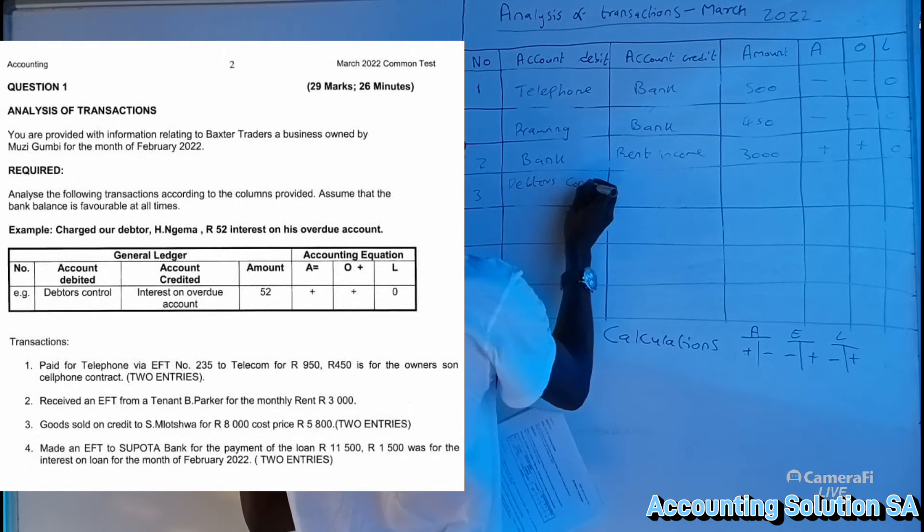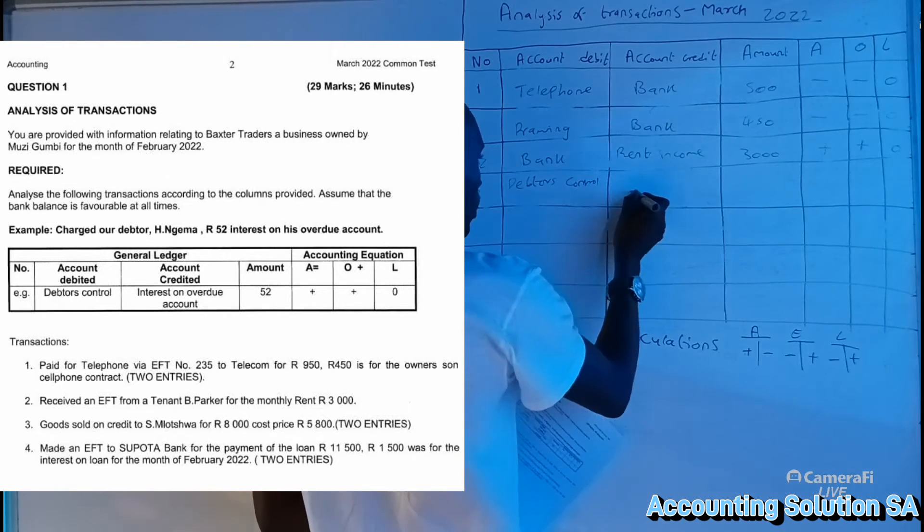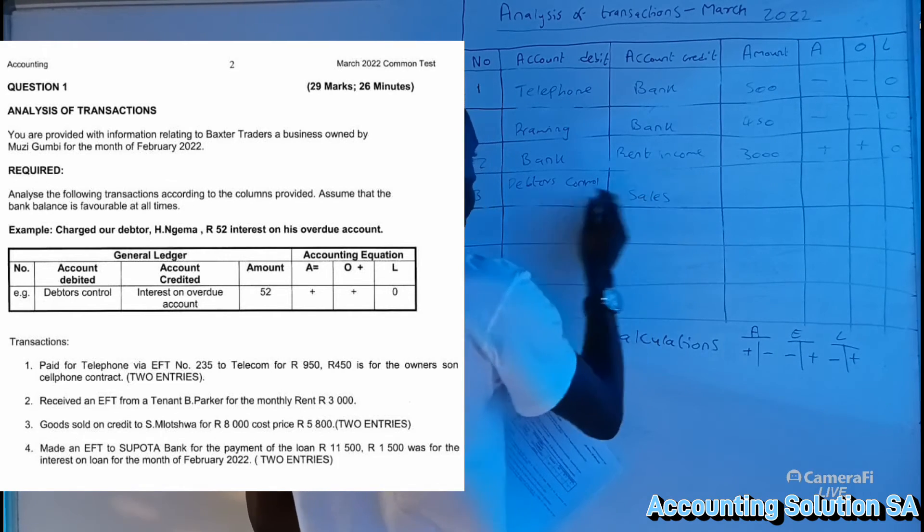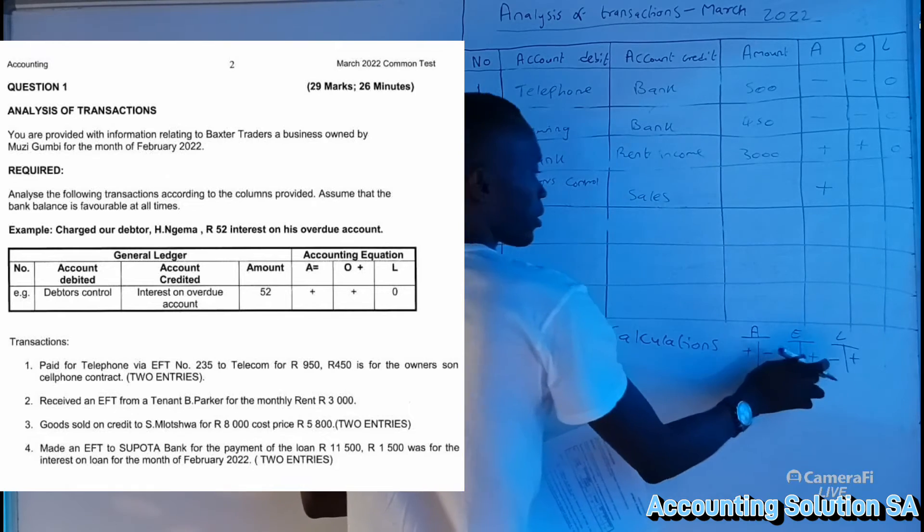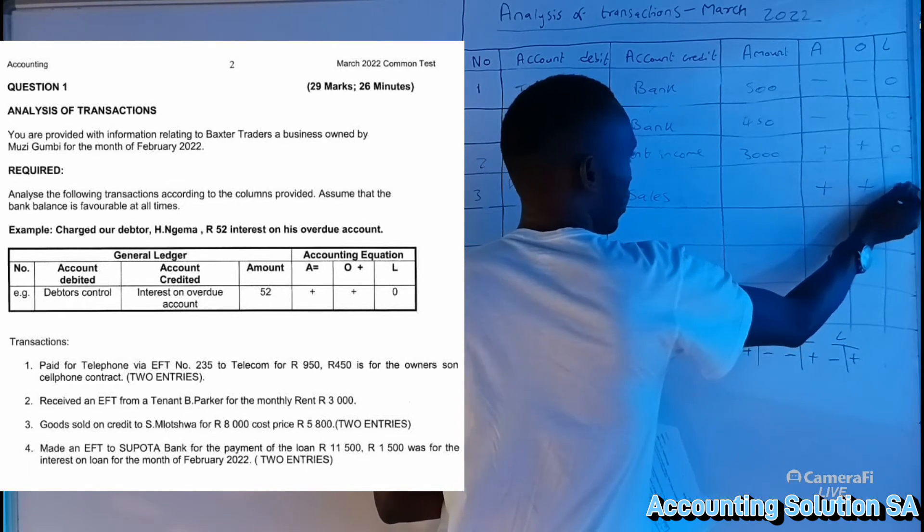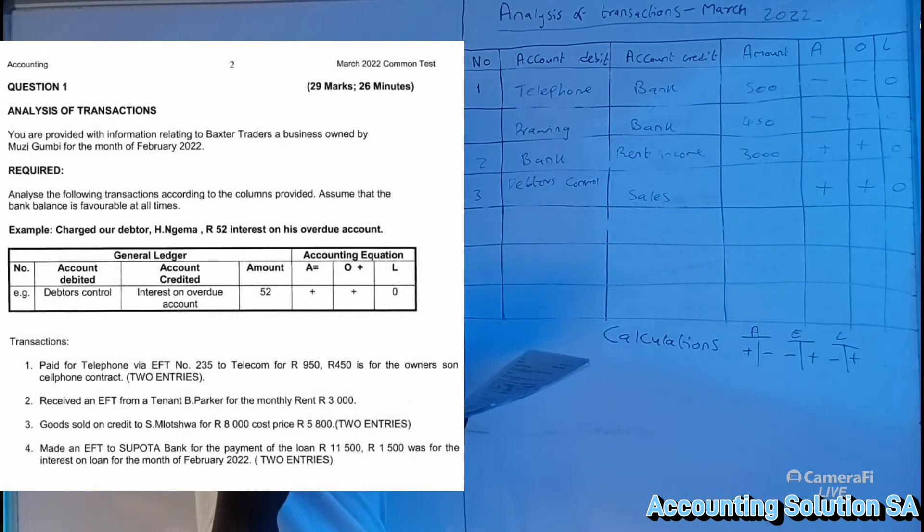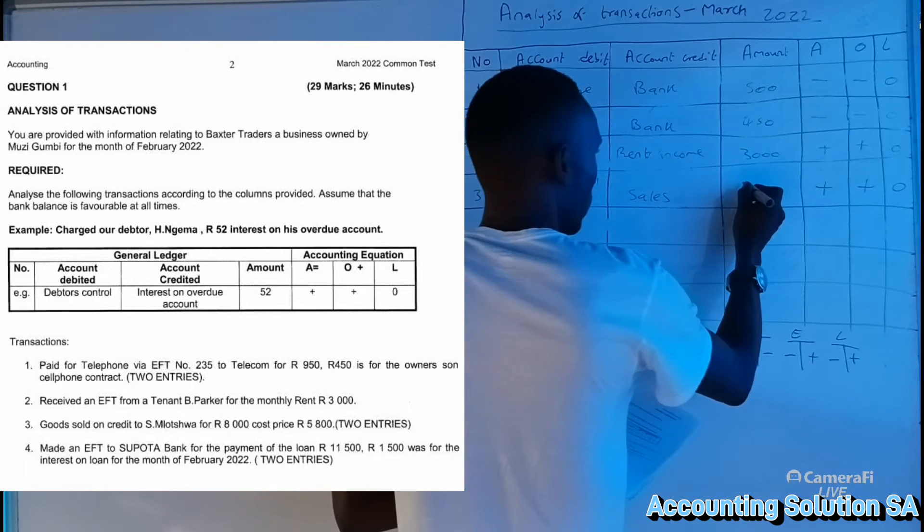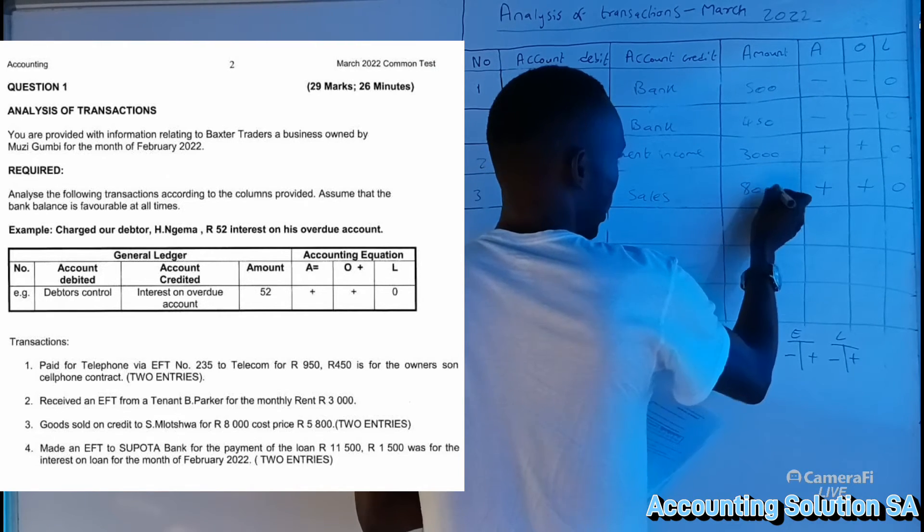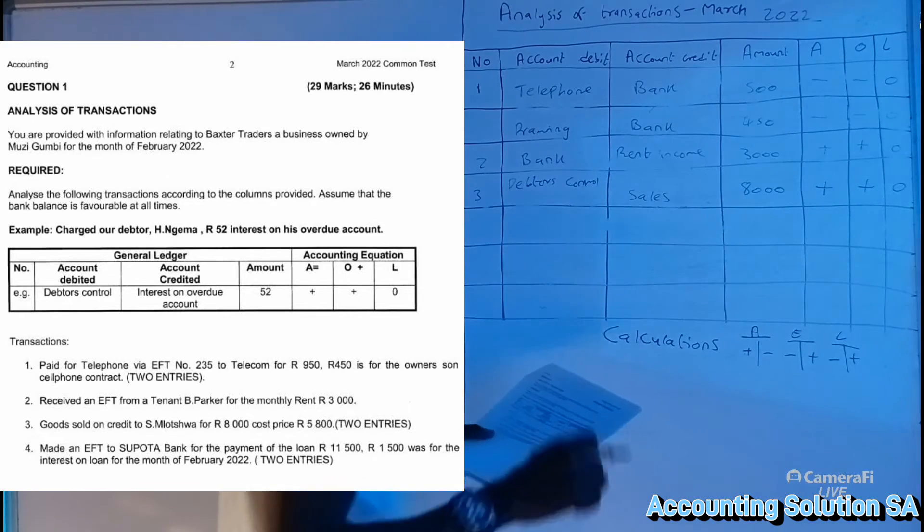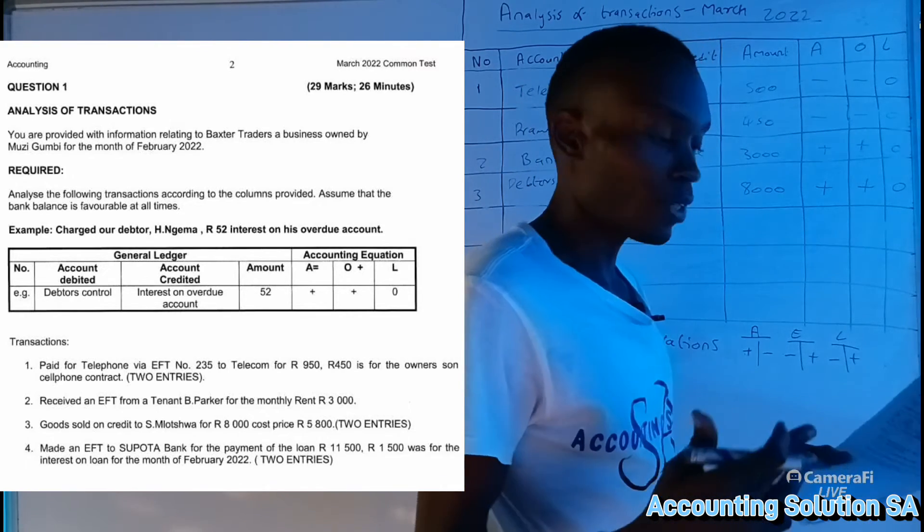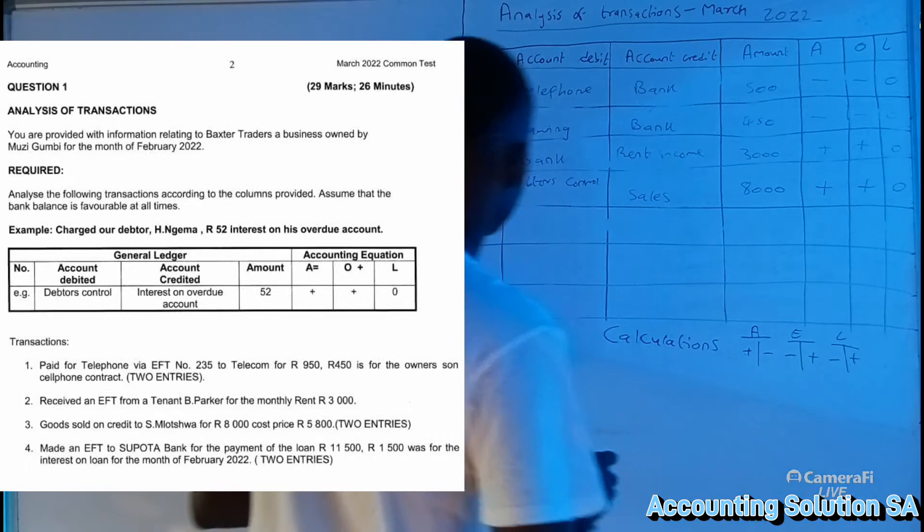Debtors control is an asset which is going to increase, and sales is equity which is going to increase. Then the amount we have to use a sales one of 8,000. Sales is always higher than the cost price. Then after that, we have to record 5,800 of cost of sales because they say two entries in this case. Cost of sales is an expense, must come to debit side.